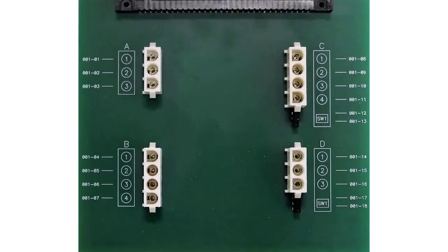The fixture board for the tutorial wire harness contains a fixture block for each of the harness connectors. It is also equipped with detection switches on fixture block C and fixture block D. Each of these detection switches is normally open. It will close when its associated harness connector is firmly seated on the fixture block.